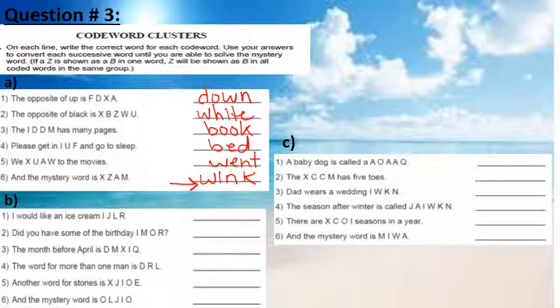Now part B. I would like an ice cream cone. Did you have some of the birthday cake? The month before April is March. The word for more than one man is men. Another word for stones is rocks. Now the mystery word. O is K, L is N, J is O, I is T, and O is K. So the mystery word is knock.